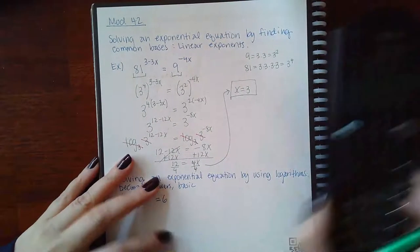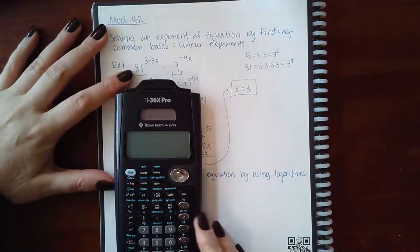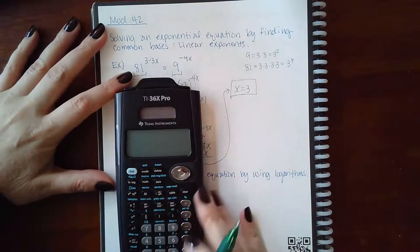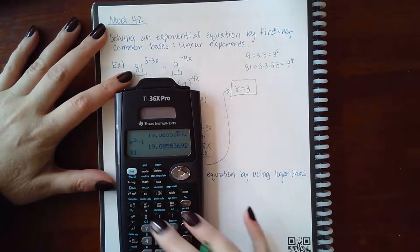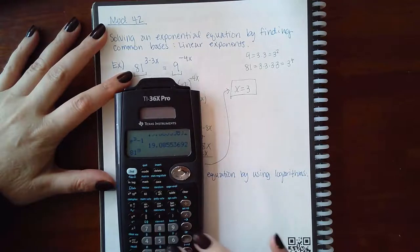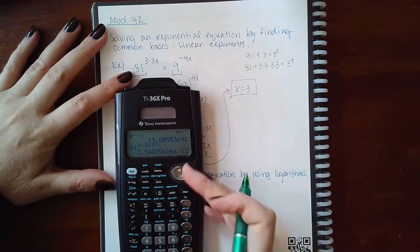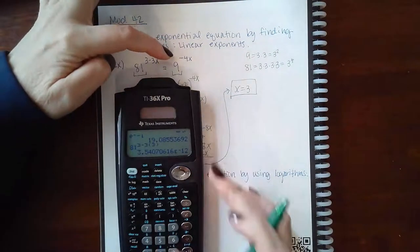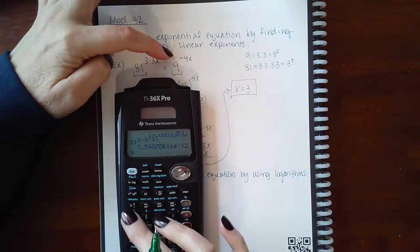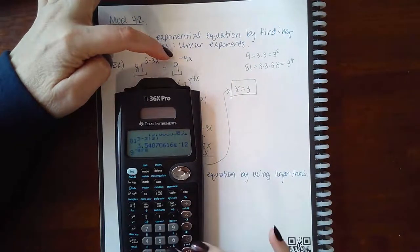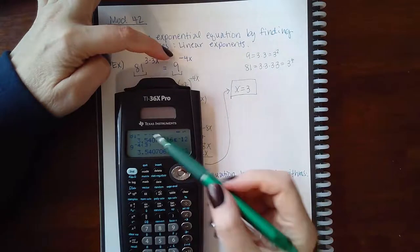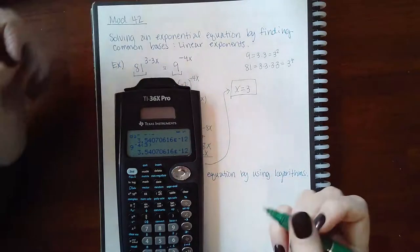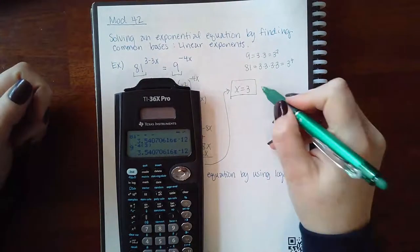However, if you want to check your answer, plug them back in. The left side should equal the right side. So 81 raised to the 3 minus 3 times 3, and it gives me this number. I just want to make sure I get the same number on the other side. So 9 raised to the negative 4 times 3. And I do, in fact, get the same thing on both sides. So therefore, 3 is the solution.